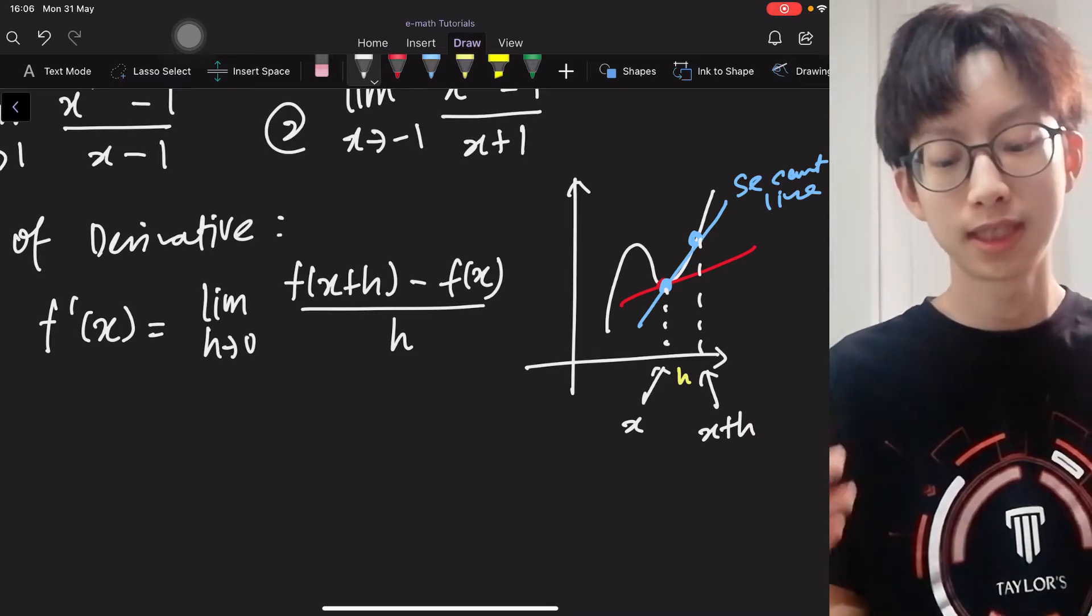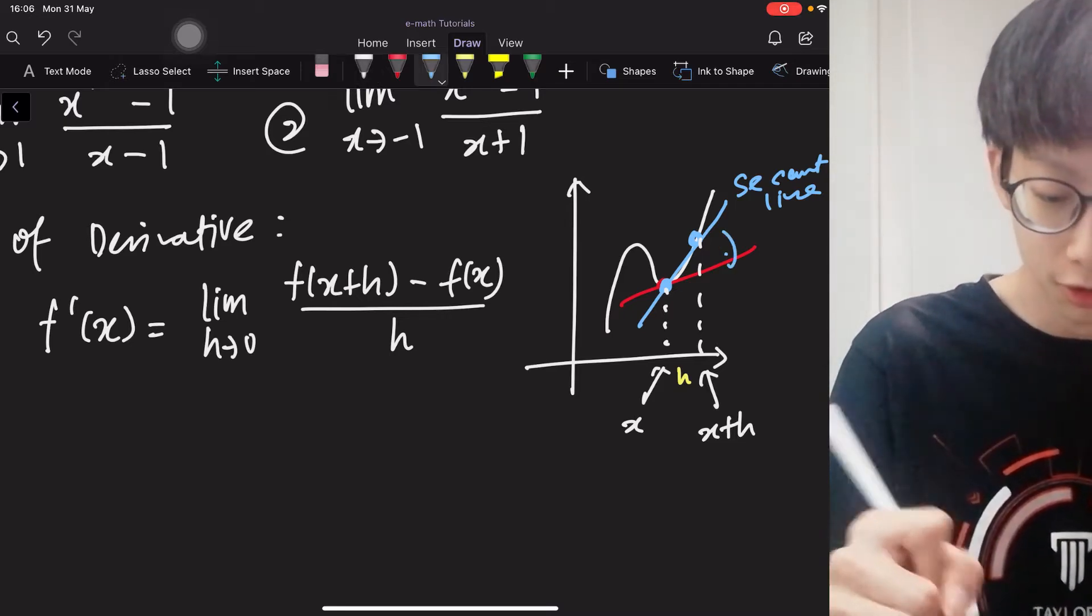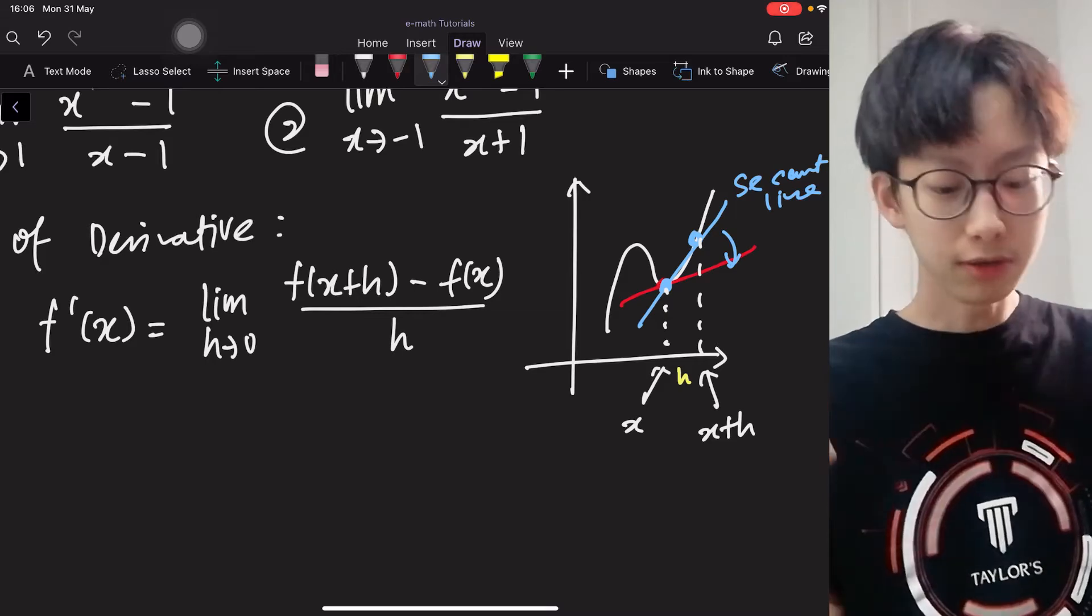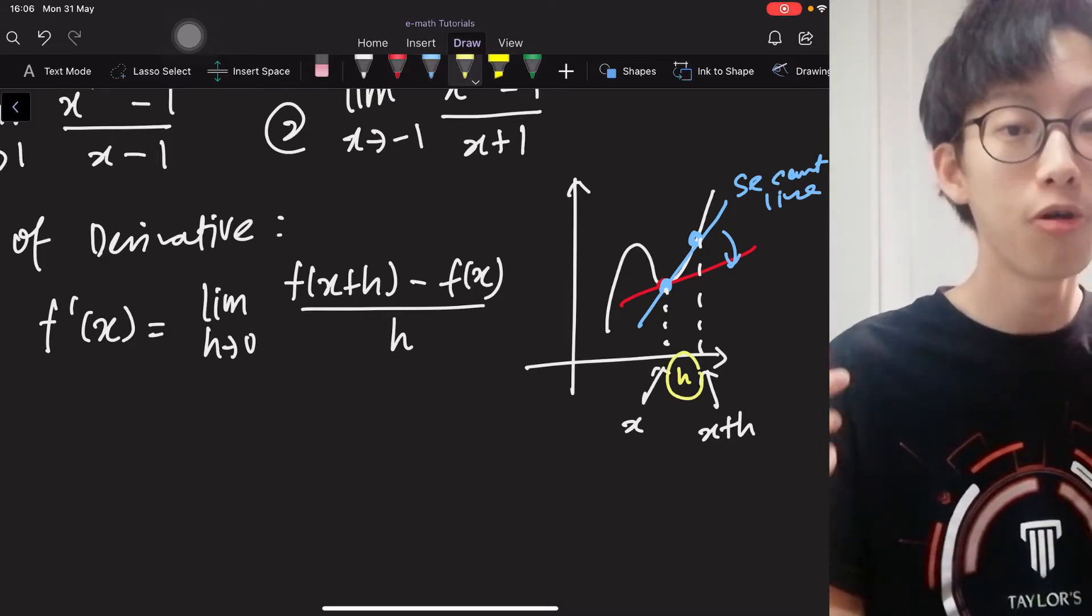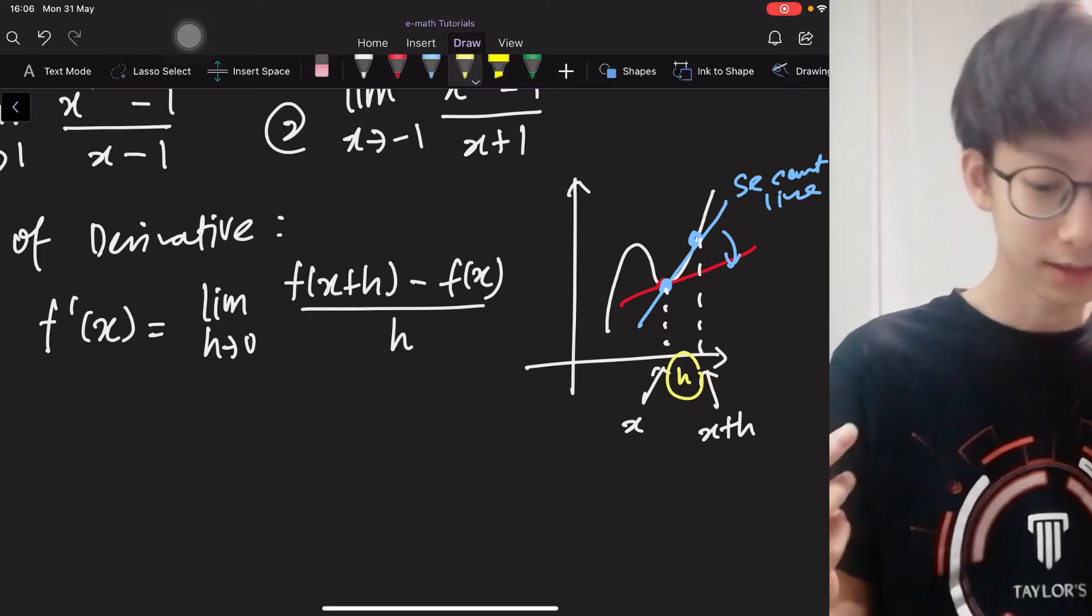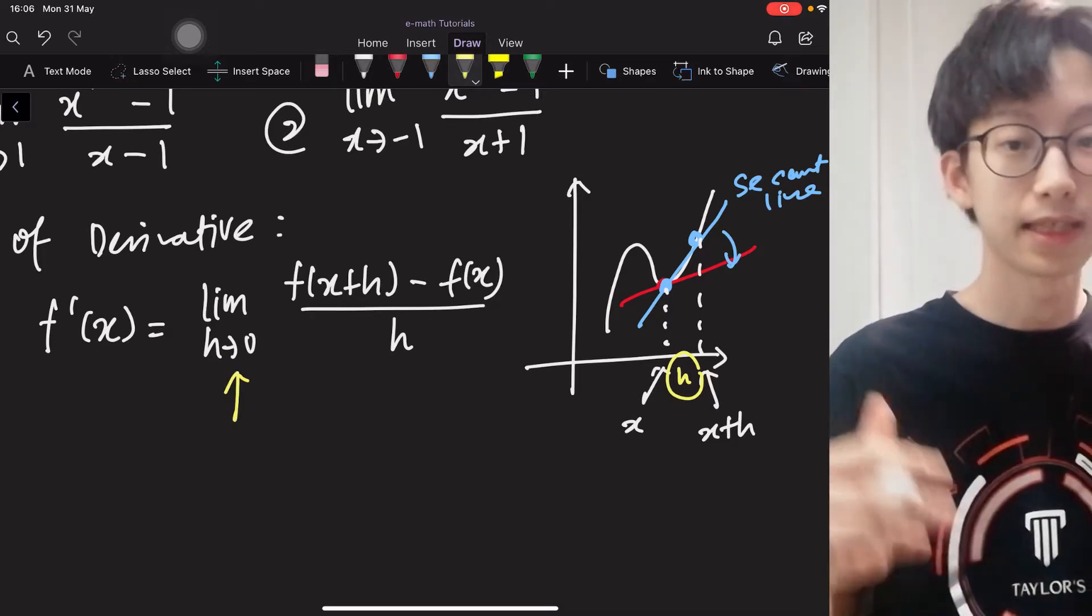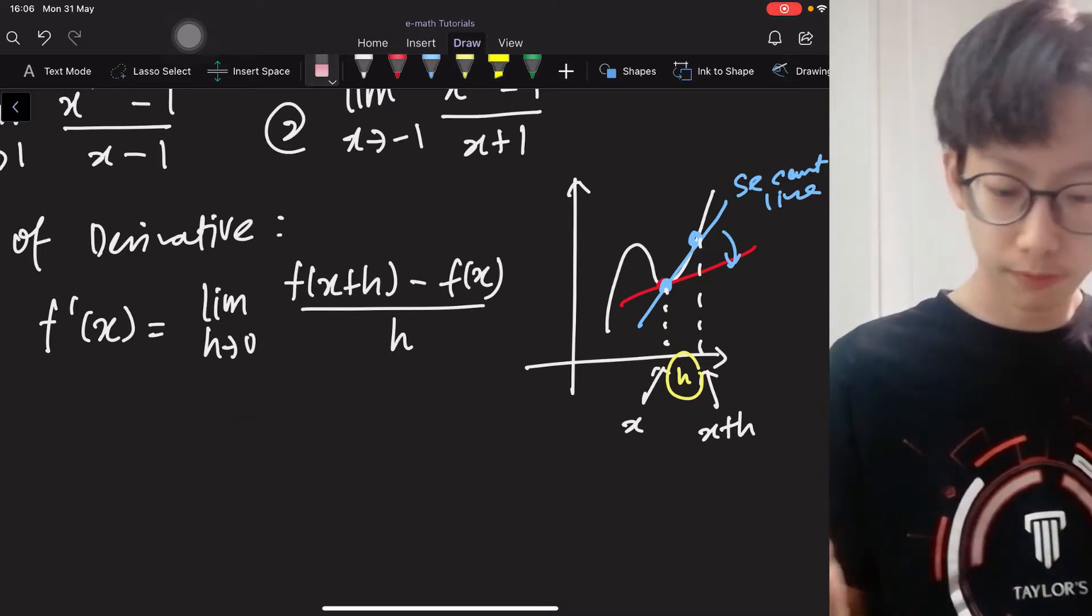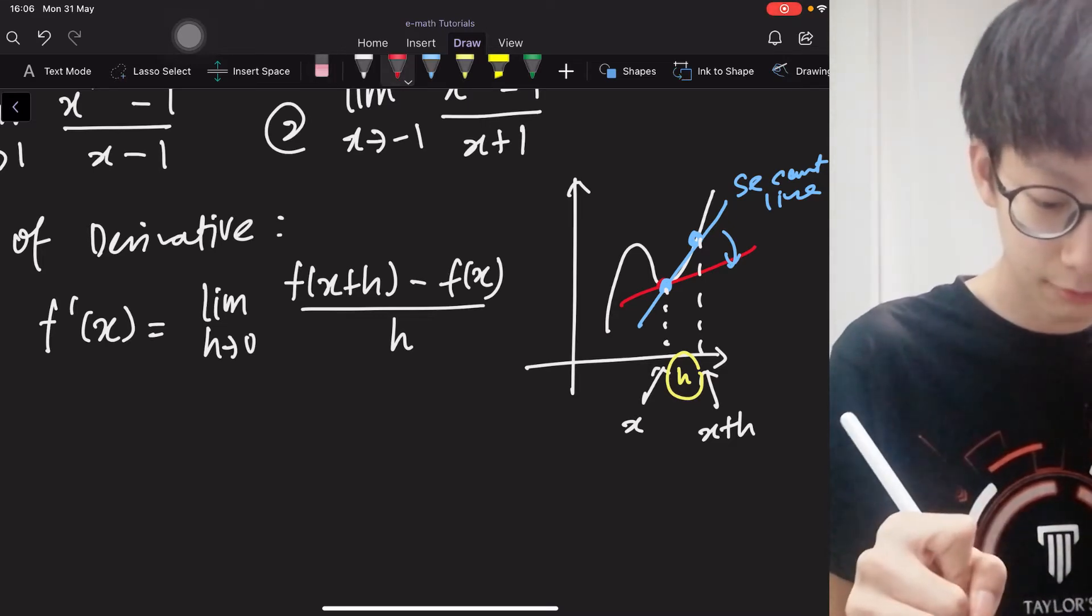All right, so in order to make your secant line to resemble your tangent line, you try to approach it. You try to shift your secant line. What you do is you try to make this h as small as possible. So that is why we are taking the limit as h approaches 0.